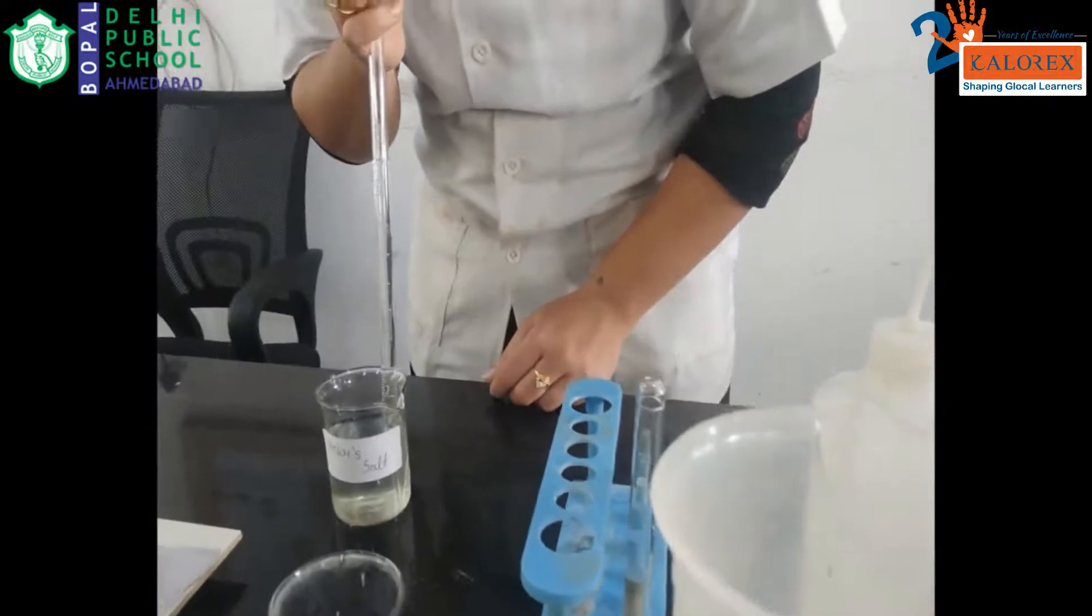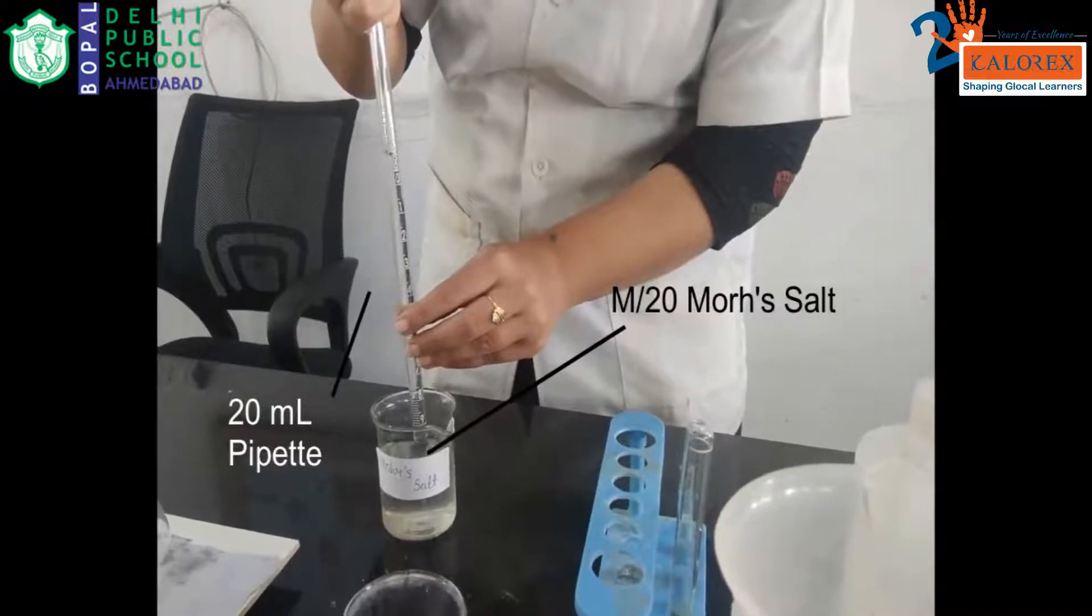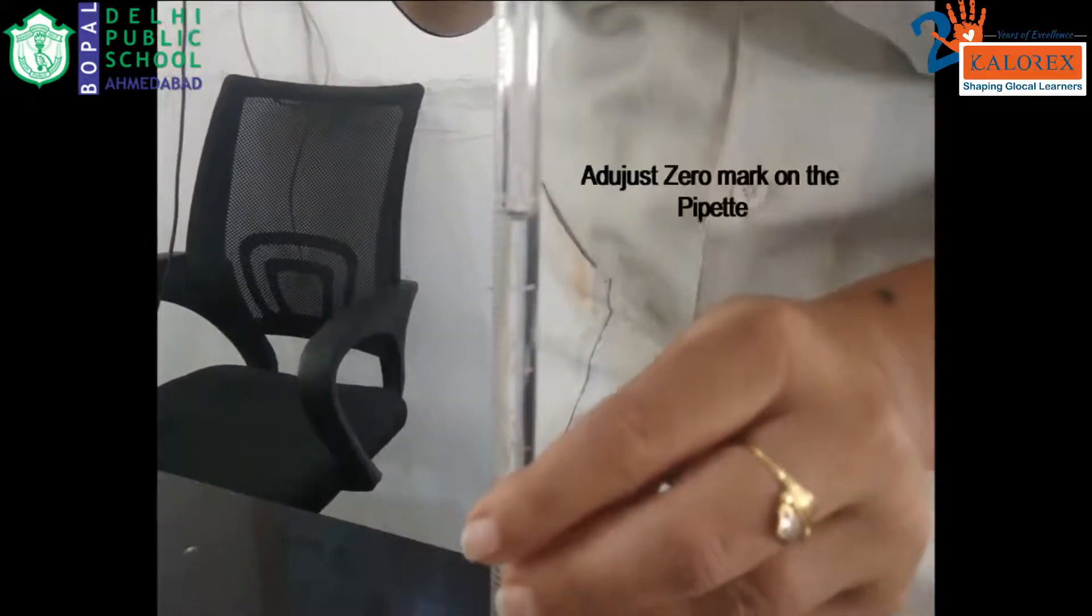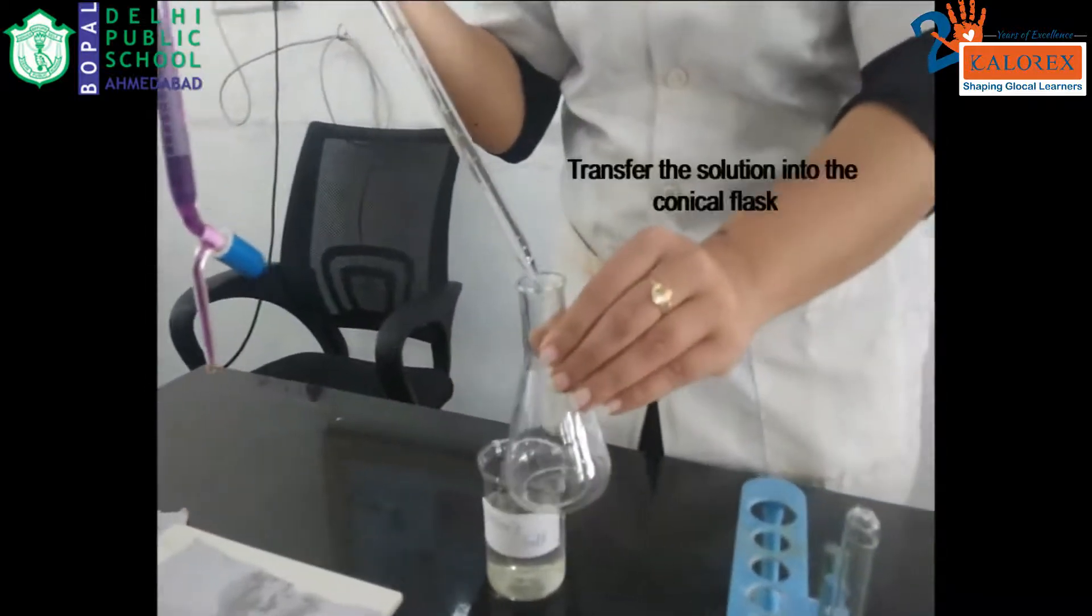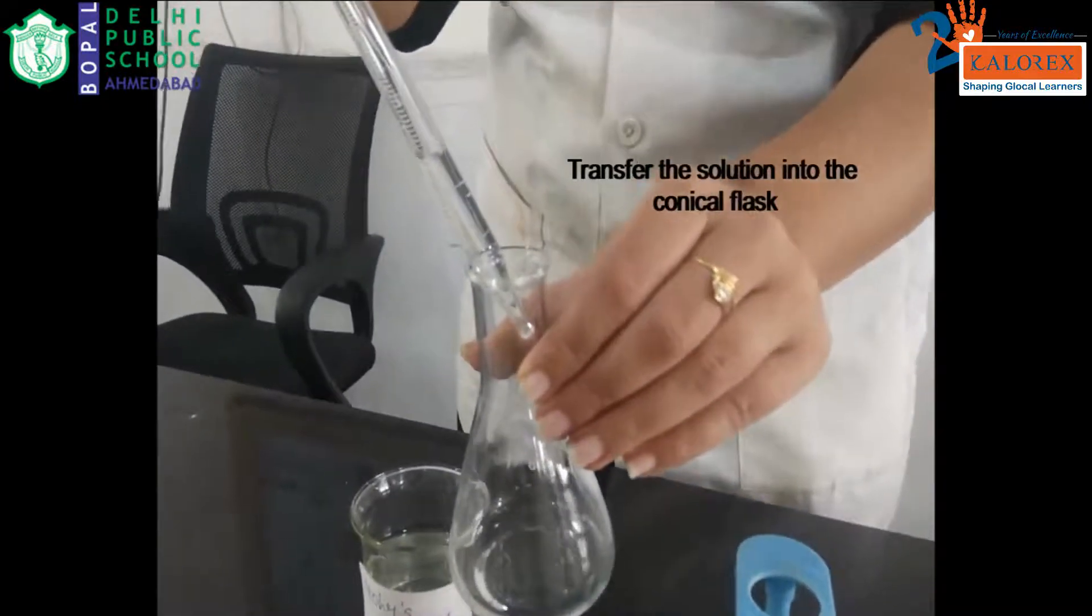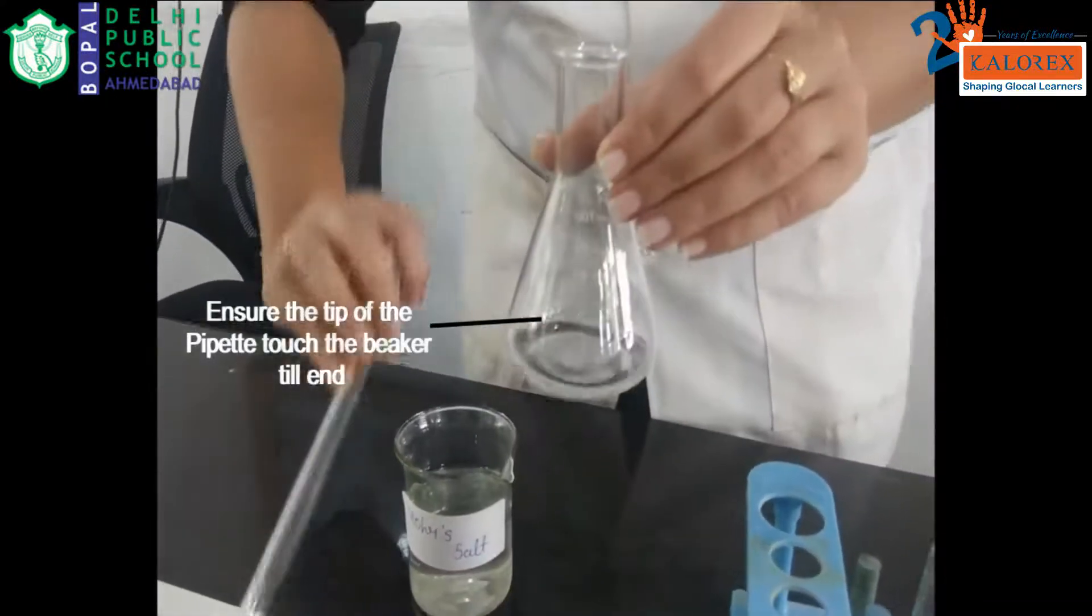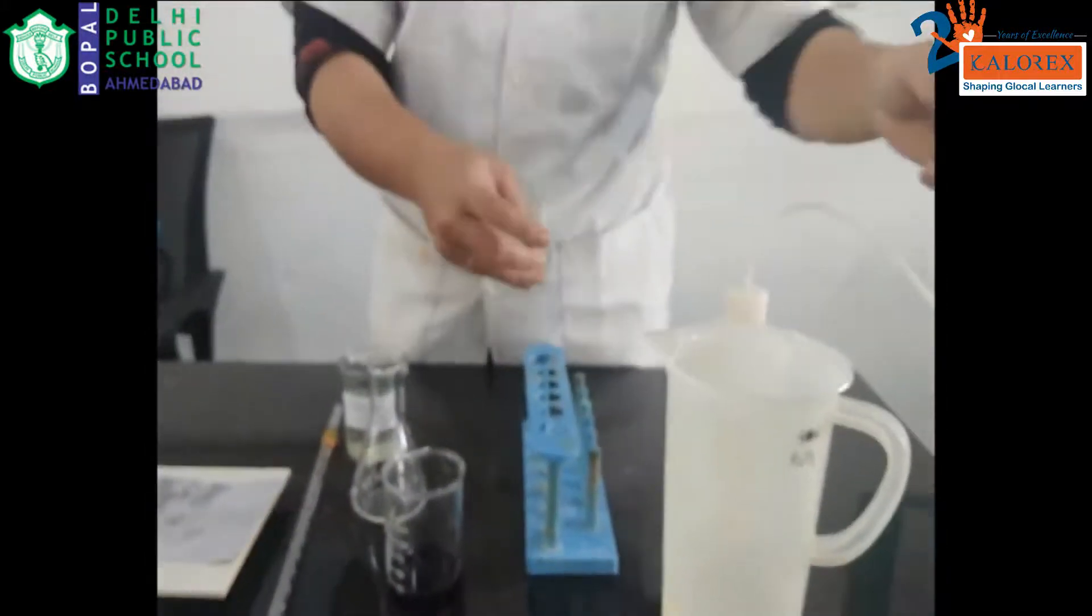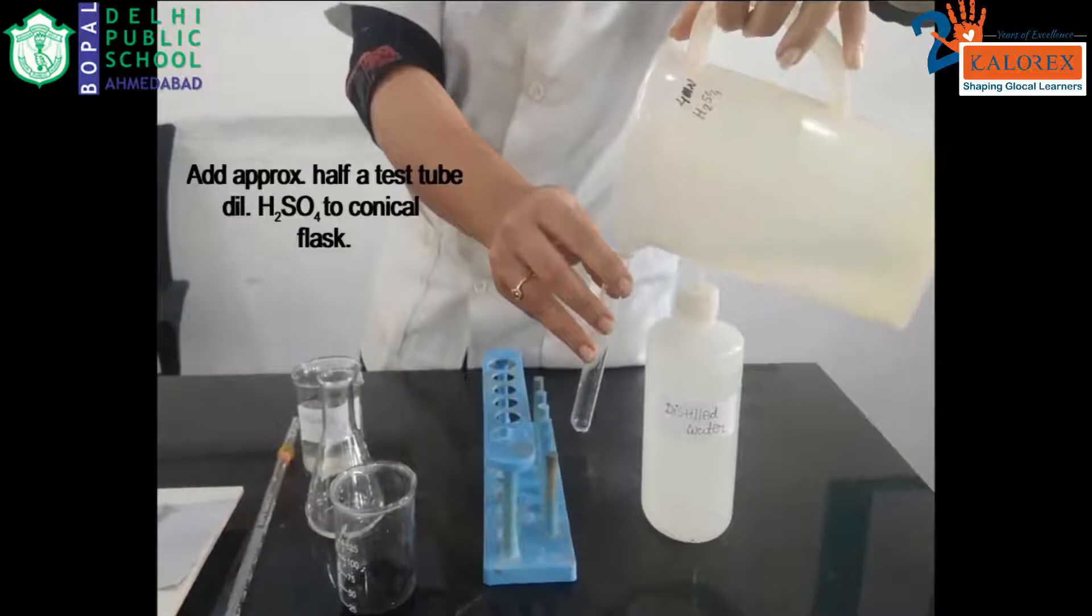Let us start the titration. First of all, use a pipette to take out Mohr salt. The molarity of Mohr salt is M by 20. Using your thumb, adjust the zero mark on the pipette and transfer Mohr salt into the conical flask. Ensure that the tip of the pipette touches the glass of the conical flask. Do not blow out the last drop from the pipette.